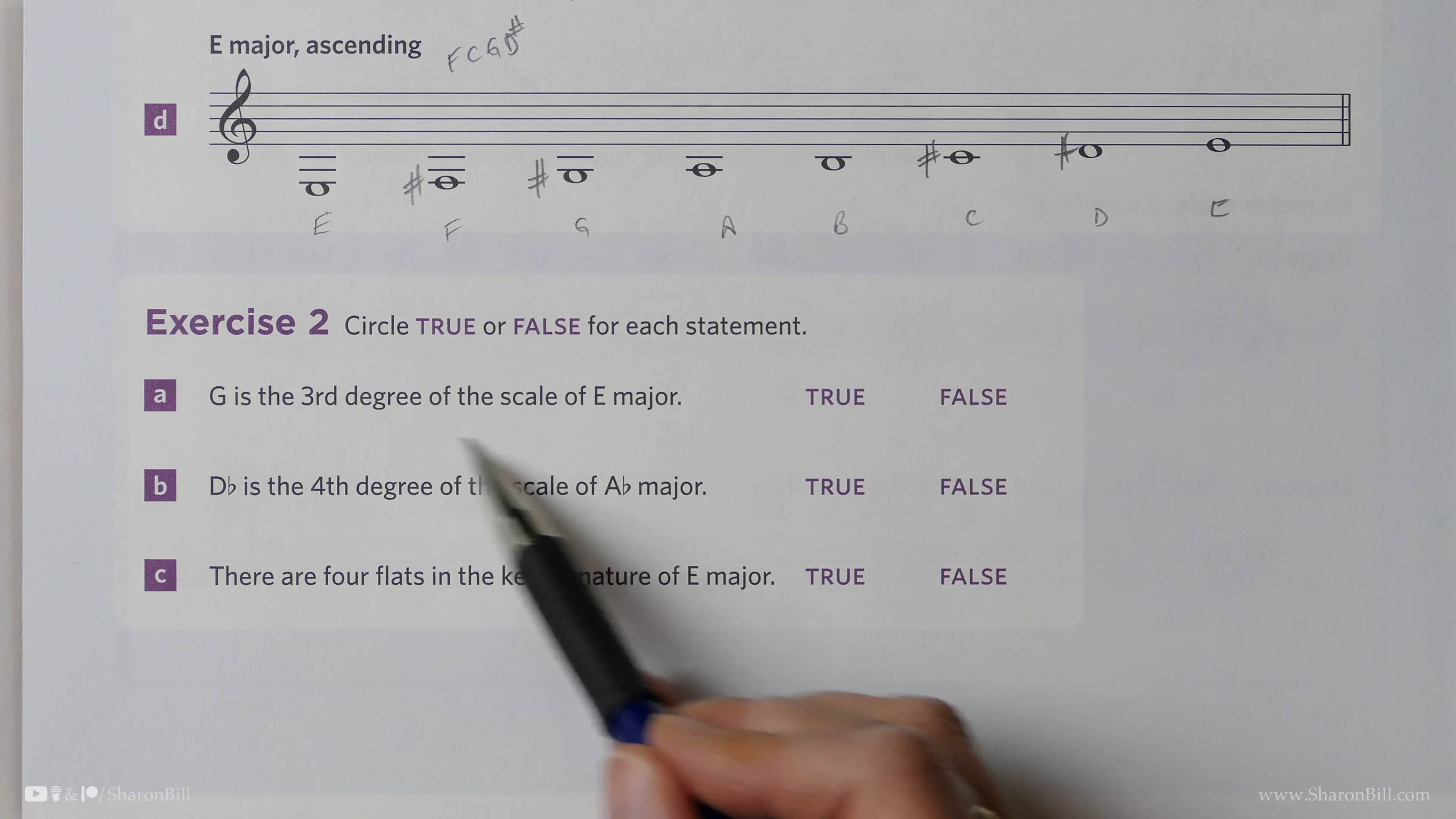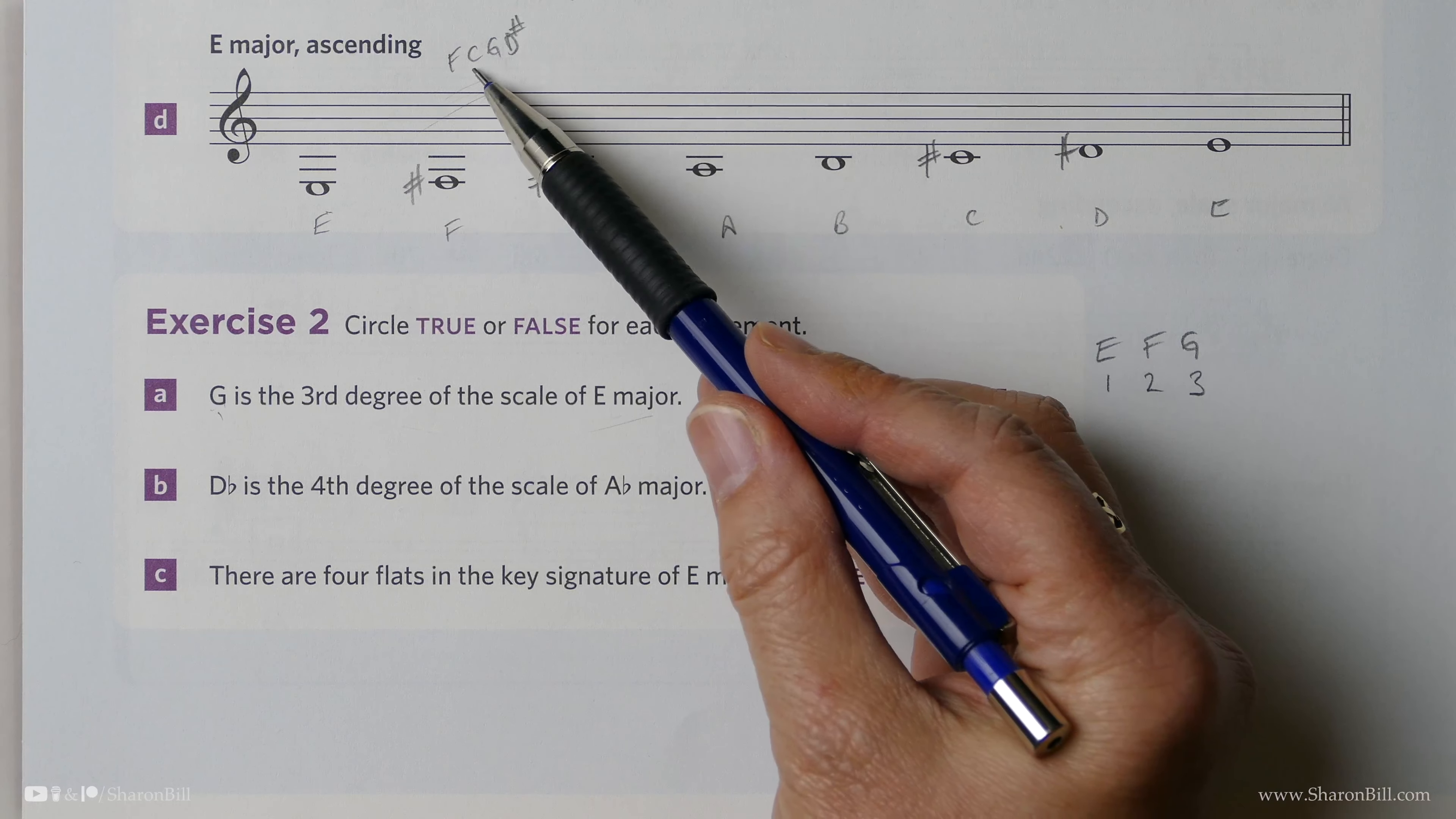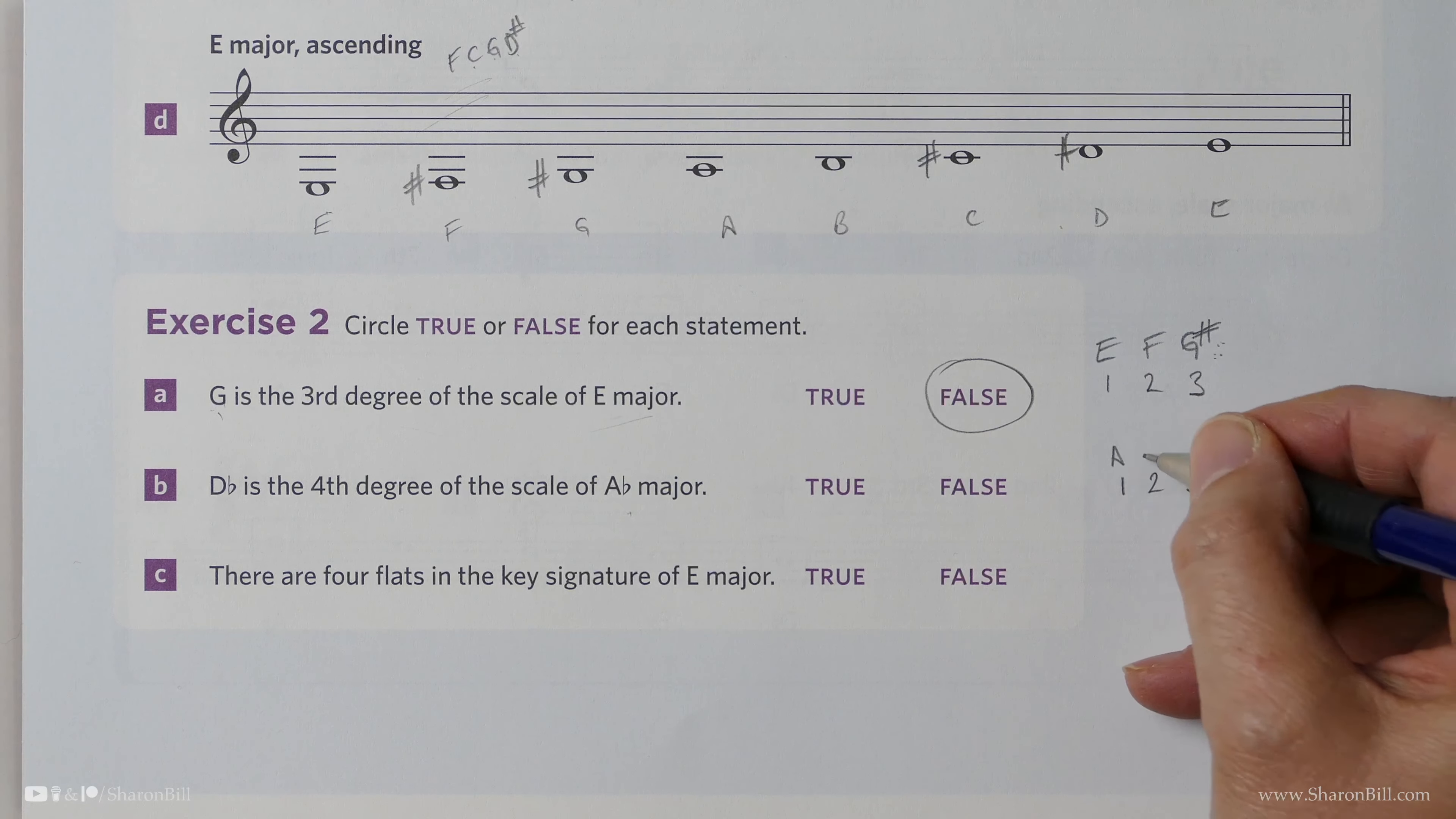And now we have the opportunity to answer these questions and we need to say whether these statements are true or false based upon what we've learned of these new major scales. So is it true or is it false that the third degree of the scale of E major is G? Well, we know that 1, 2, 3—E, F, G. That seems correct. However, we know that E major has a key signature of F sharps, C, G sharps, D sharps. So G is not correct. It would need to be G sharp, wouldn't it? Otherwise, it's not E major. And so in fact, that's false.